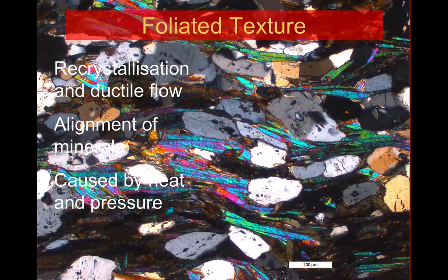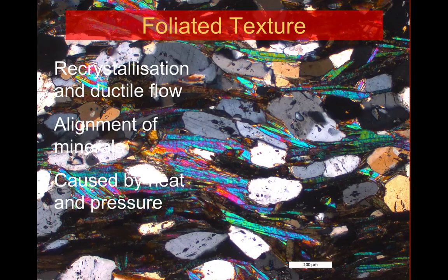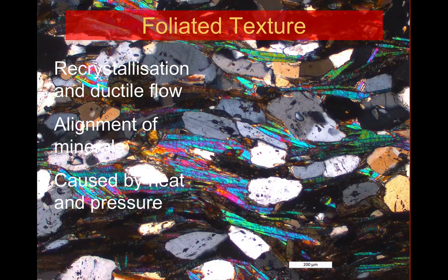The other big difference in metamorphic textures is where we get what we call foliation. Here the rock is recrystallized, like we see in a granoblastic texture, but we can see a distinctive alignment of the minerals. This is the foliation. The heat causes the recrystallization, and pressure causes the growth of these minerals in a preferred alignment, usually at right angles to the direction of pressure.